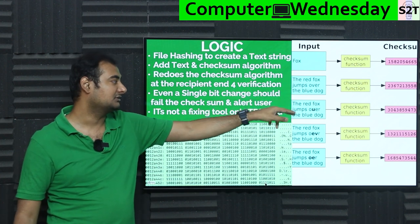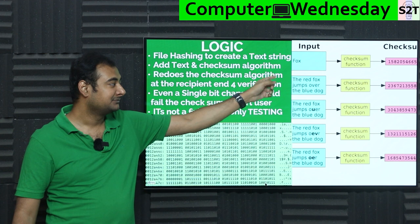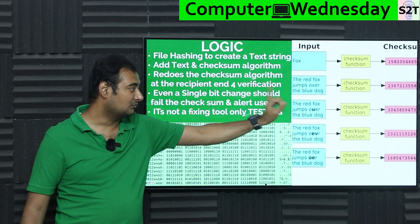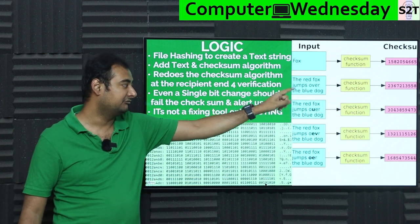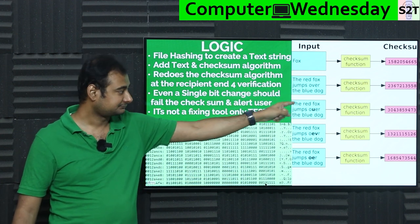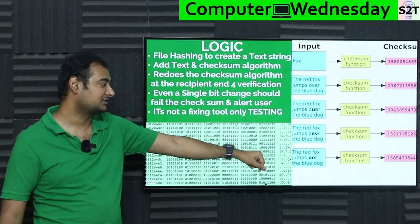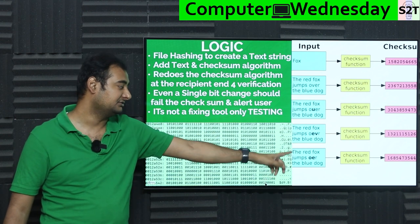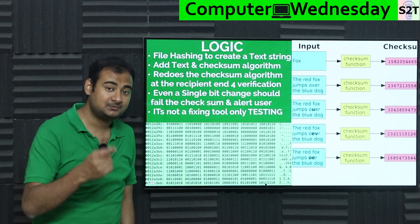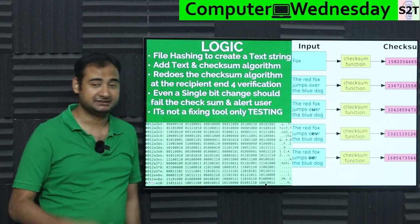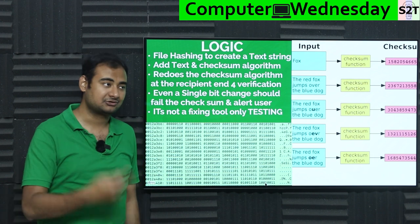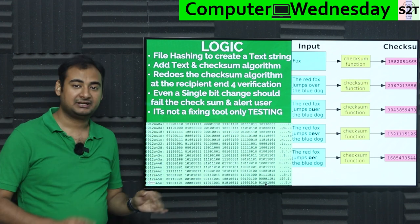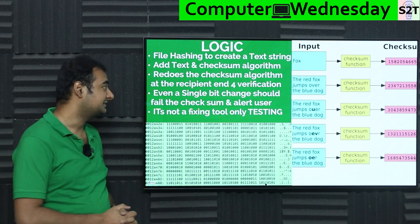For example: 'The red fox jumped over the blue dog' — put it through a checksum function, you get one output. You change one letter from V to U — the output is different. You change a space — outcome is different. You change text color — outcome is different. So any tampering with the file changes the outcome.